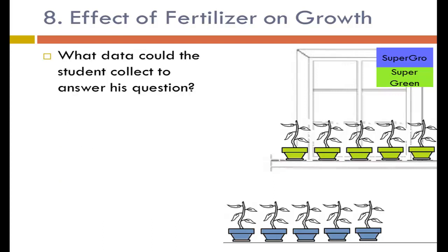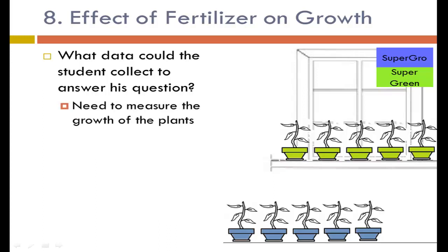What data could the student collect to answer his question? He needs to measure the growth of the plants. There are several ways to do this: plant height, number of leaves, number of flowers, or mass.